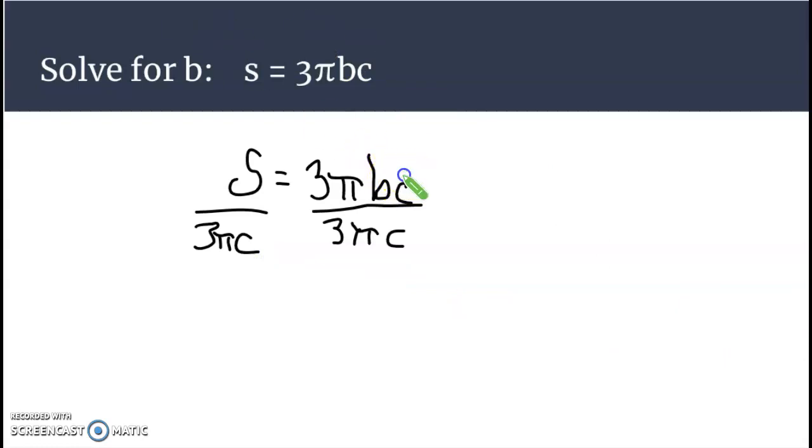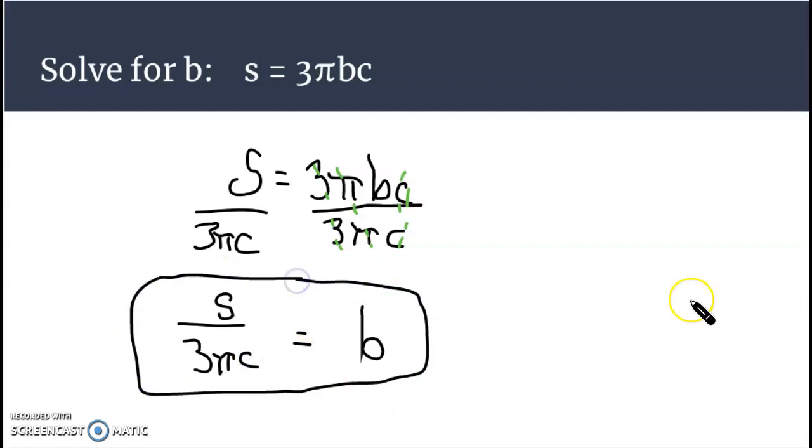Now notice what happens - the c on the left side, c is going to cancel out, π is going to cancel out, and 3 is going to cancel out. Technically they don't really cancel out, what happens is they're becoming the number 1 which we don't have to write, and that's going to isolate b. So we have s over 3πc and that is how we solve for b. Yes, we don't know the exact number that b is, but we've isolated it, we got it by itself and that's what these problems are all about.